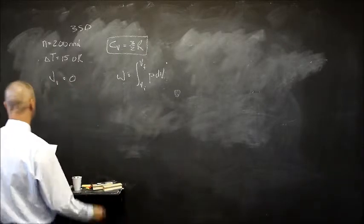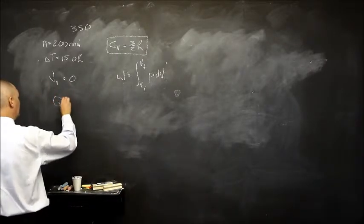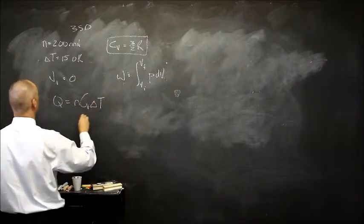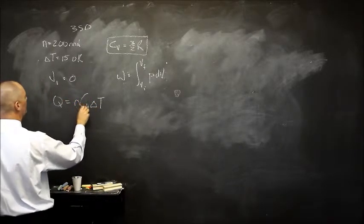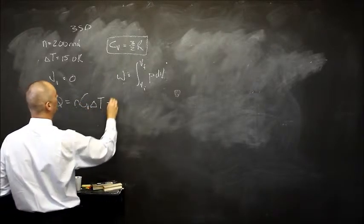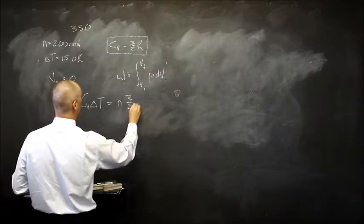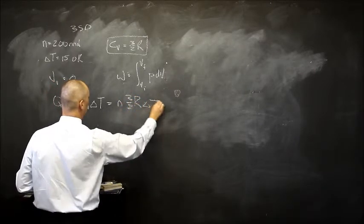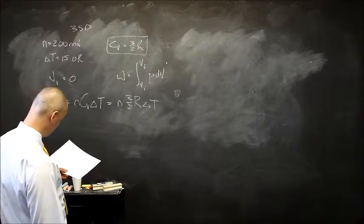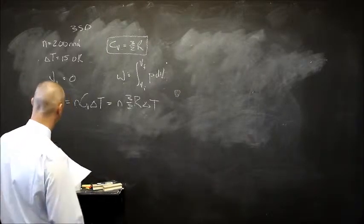Next question: the energy transferred as heat. Heat equals Ncv delta T. We were given N. This is monatomic ideal constant volume, so I can replace that with N 3 over 2 R delta T. Let's see how beautiful this works out.